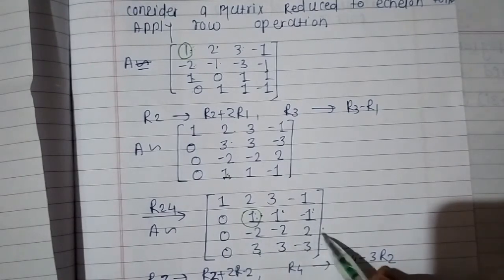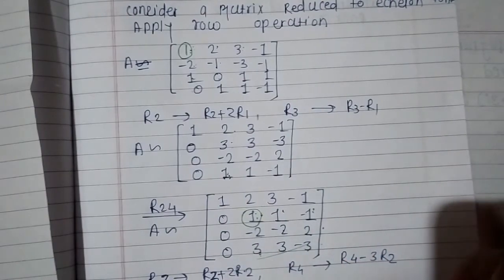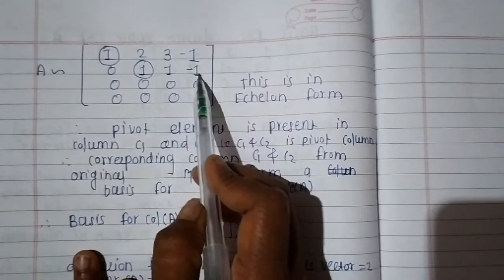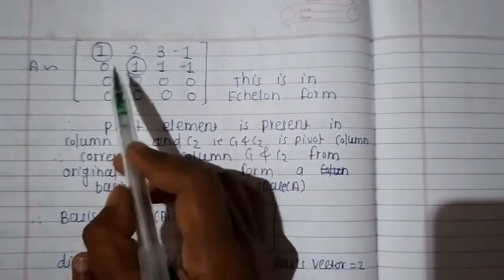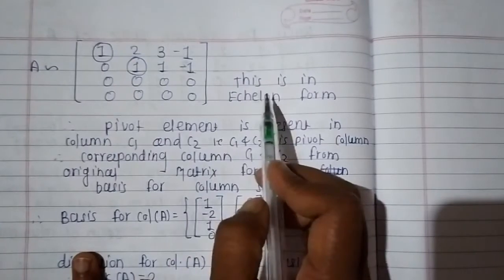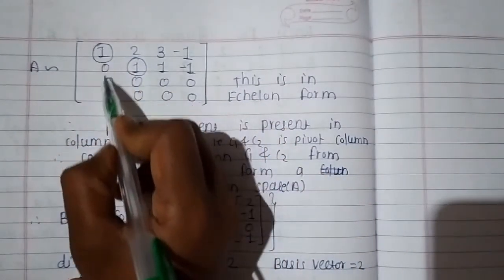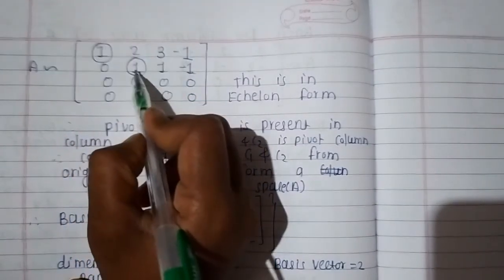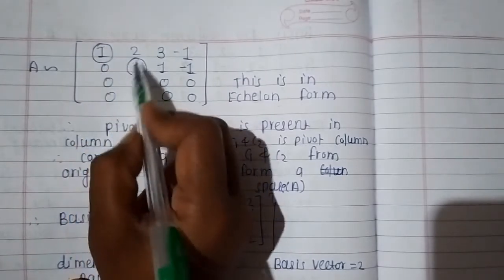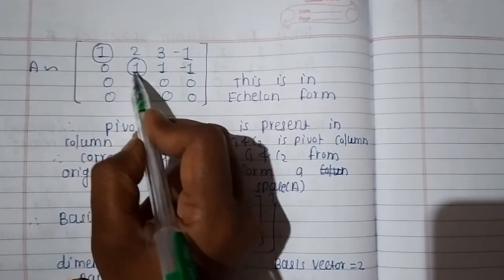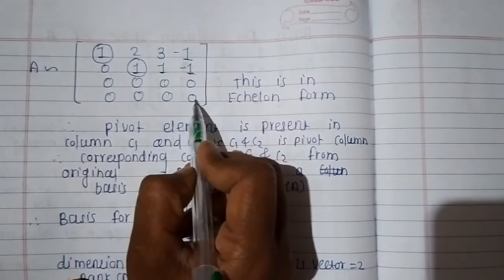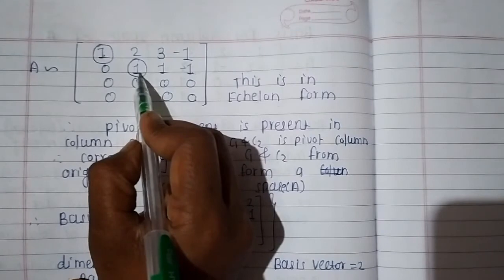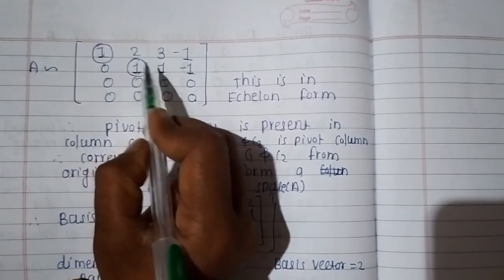After all row operations, the bottom two rows are completely zero. The top two rows are non-zero. To find the basis for column space, we observe the reduced row echelon form and identify the pivot positions. The first pivot is in column C1 and the second pivot is in column C2. Therefore C1 and C2 are the pivot columns, and they form the basis for the column space.